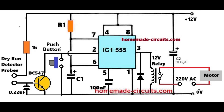As soon as the water supply at the source becomes unavailable, the water across the dry run detector probes is removed, which enables the monostable timer back into action, causing the motor to remain operational for some moments until the monostable time has elapsed, and then the motor pump is automatically turned off.